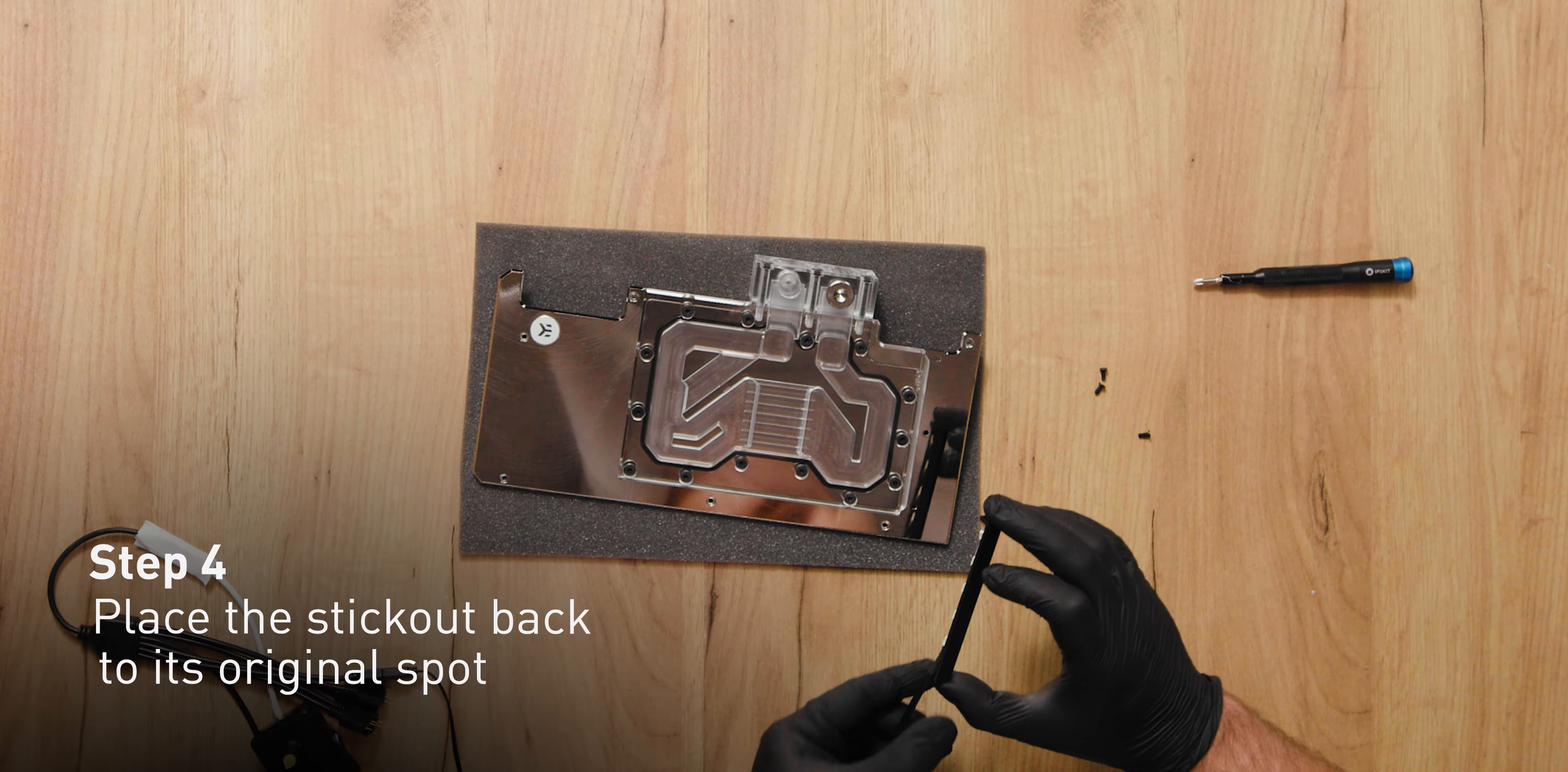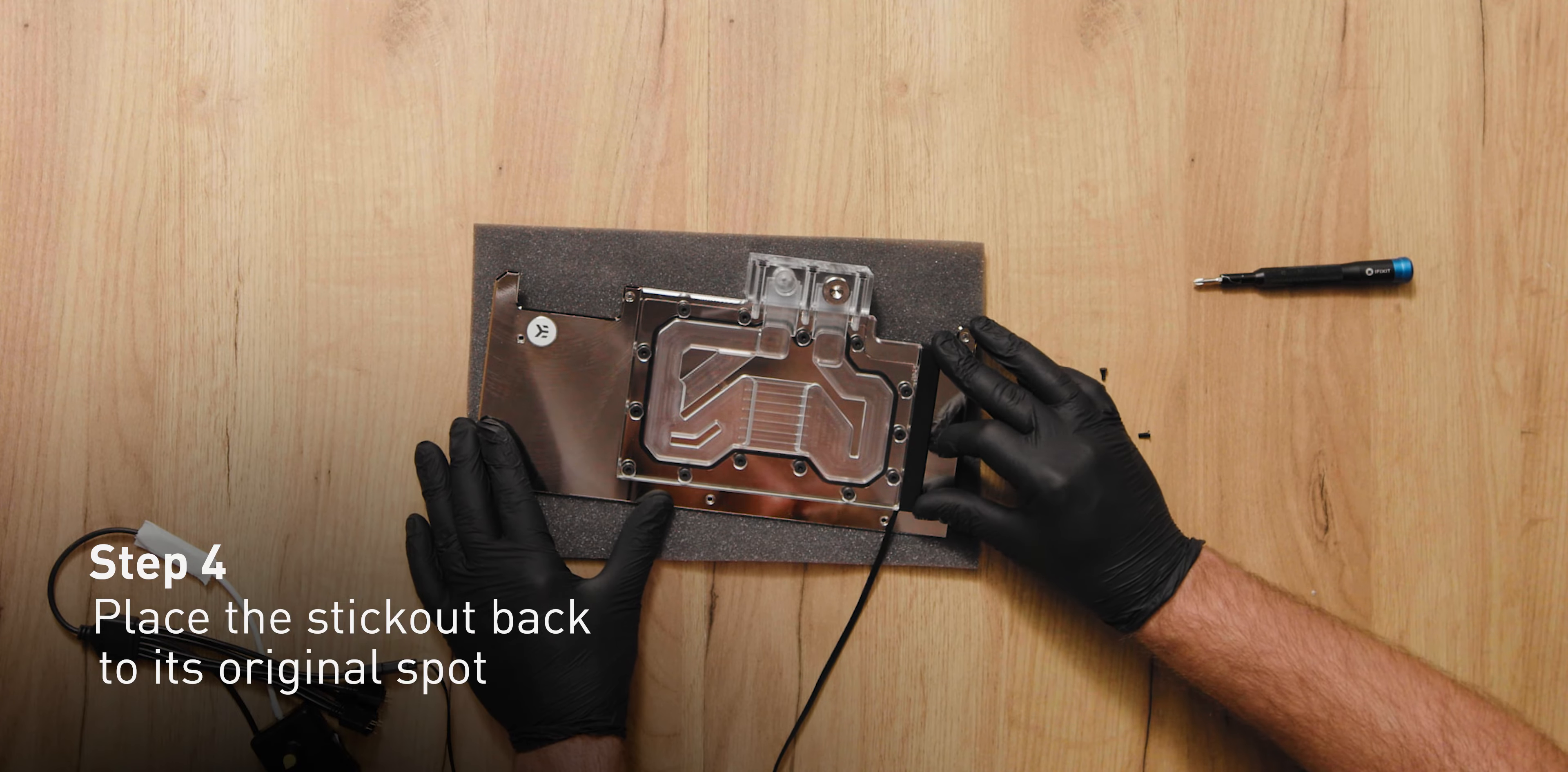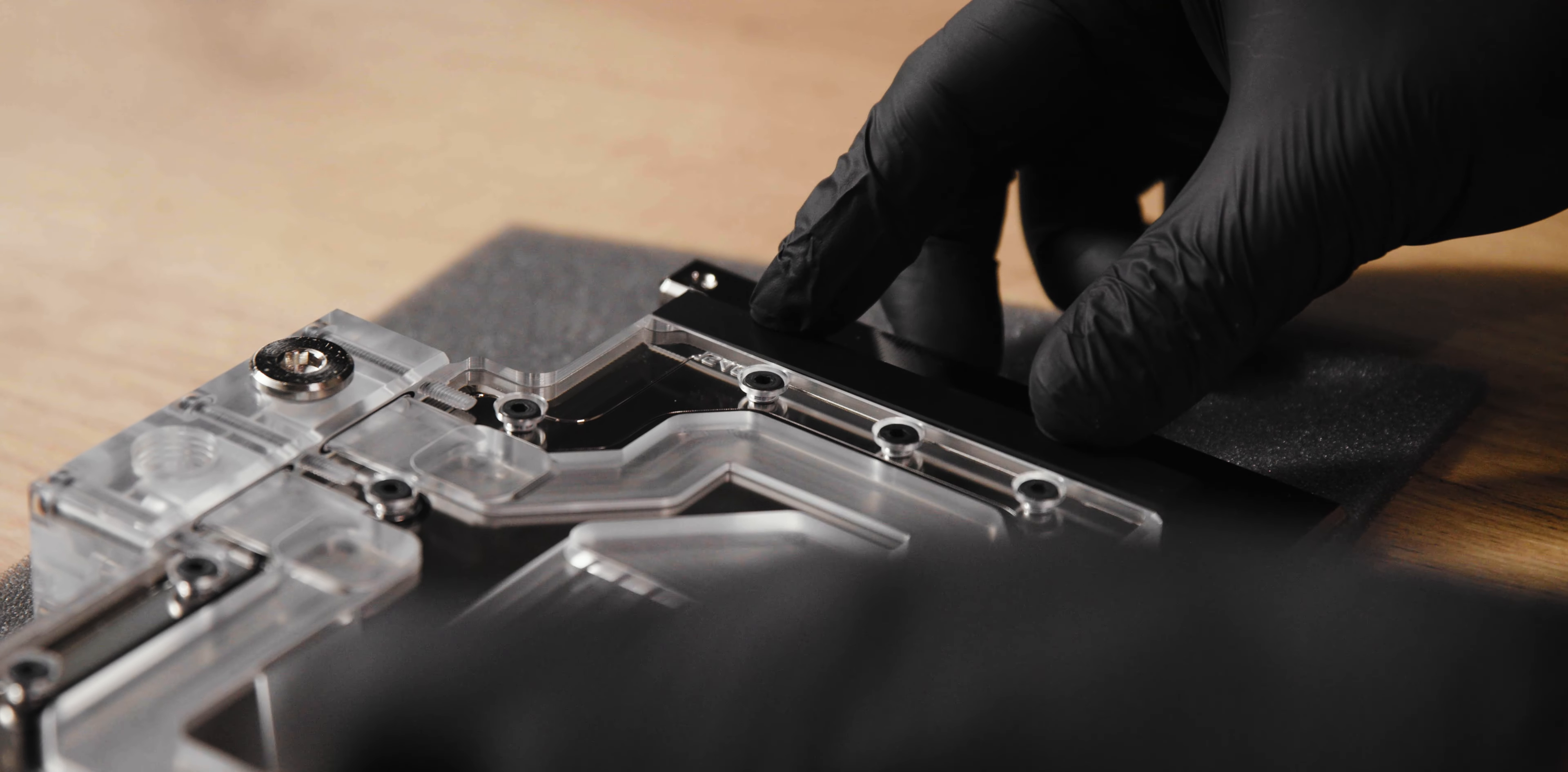Step 4. Place the stick out back to its original place and check that it fits nicely and is flush with the block. If not, reinstall the LED strip and make sure that it's seated properly.